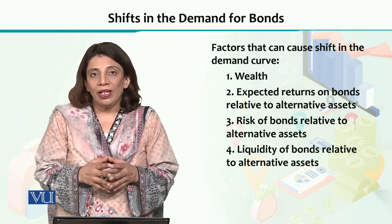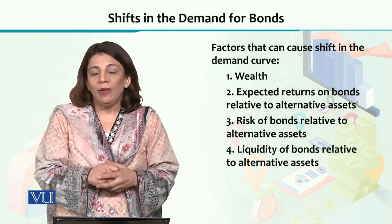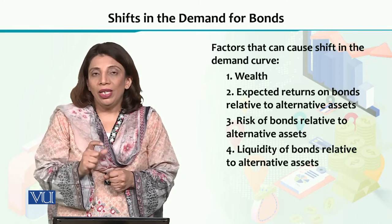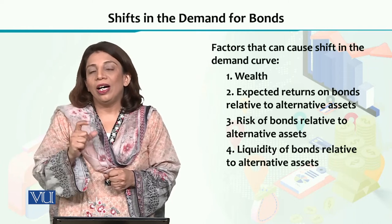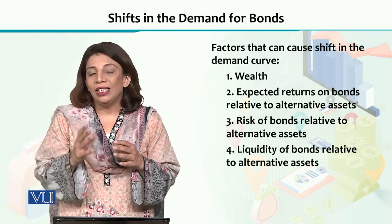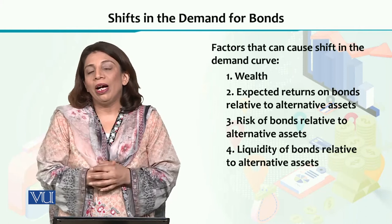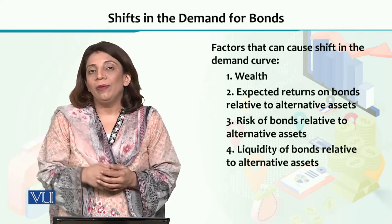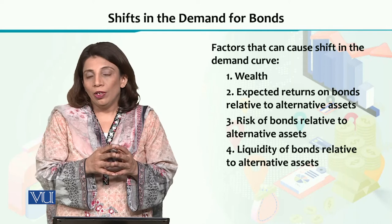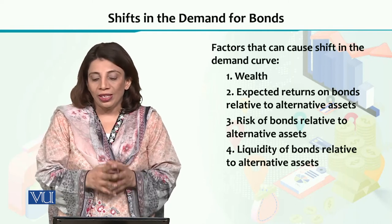तीसरा एहम factor है कि किसी भी bond के साथ जो risk attached है, अगर उसमें significant increase या significant drop देखते हैं, तभी भी आपको demand curve में forward और backward shifts देखने को मिलते हैं. ये shifts forward होंगे या backward होंगे, अभी हम उनको discuss करते हैं.